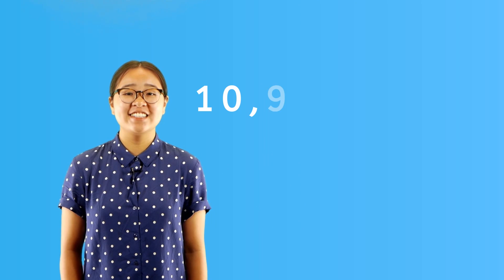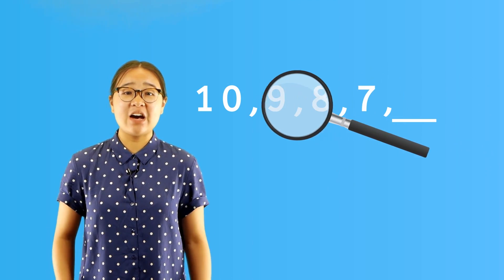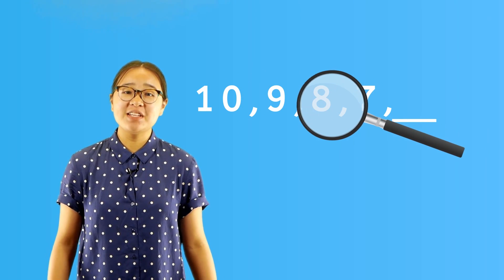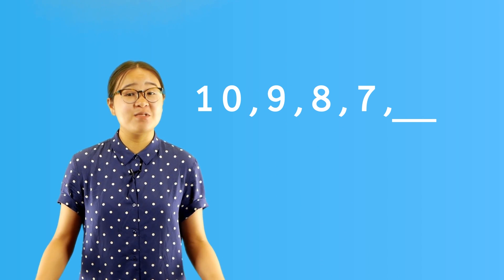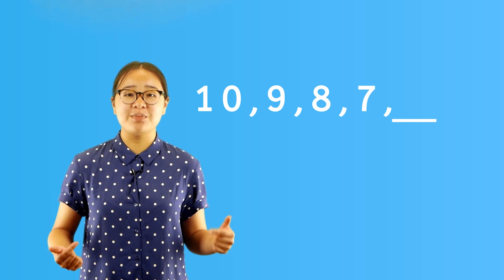Number patterns can also work in reverse. For example, in this pattern, what comes next? Your detective skills tell you that the numbers are decreasing. That means that this pattern isn't adding on, it's subtracting. In fact, the pattern is decreasing by one.